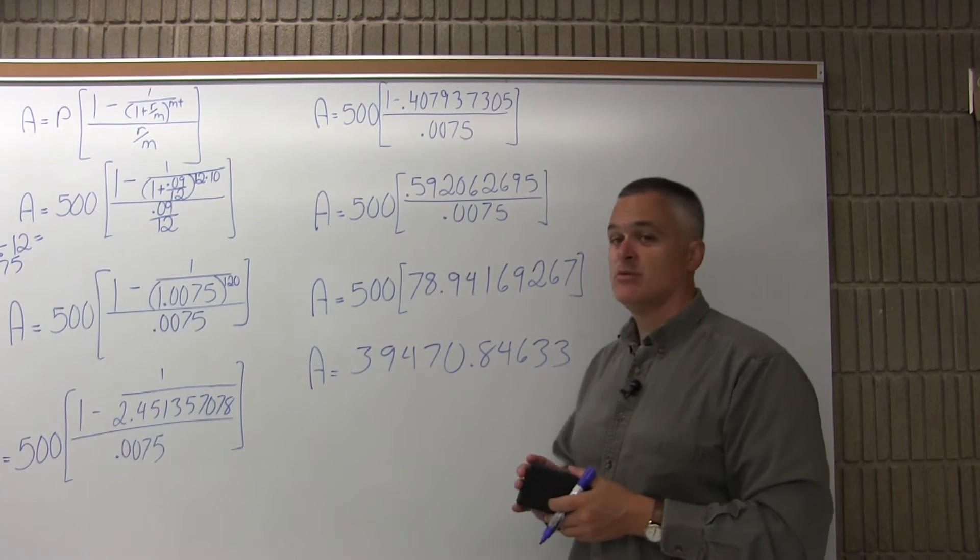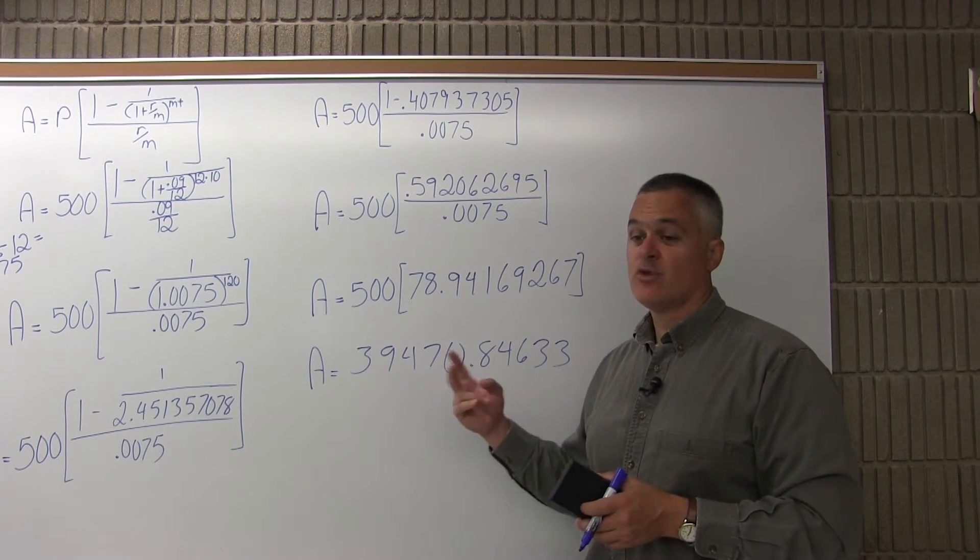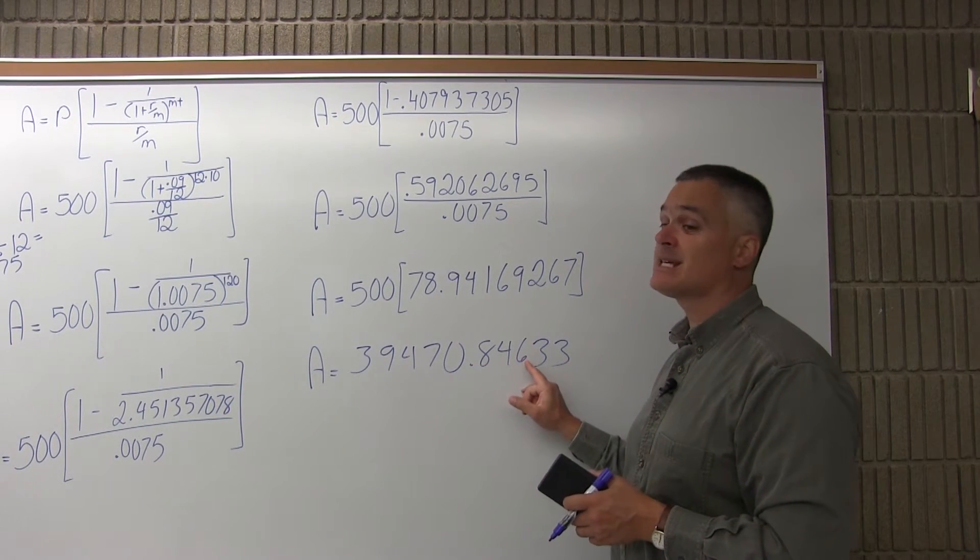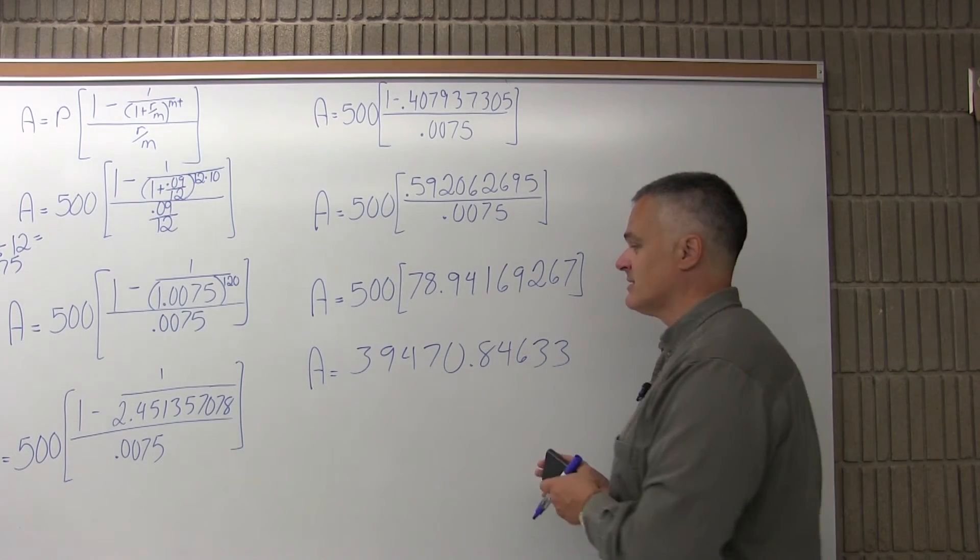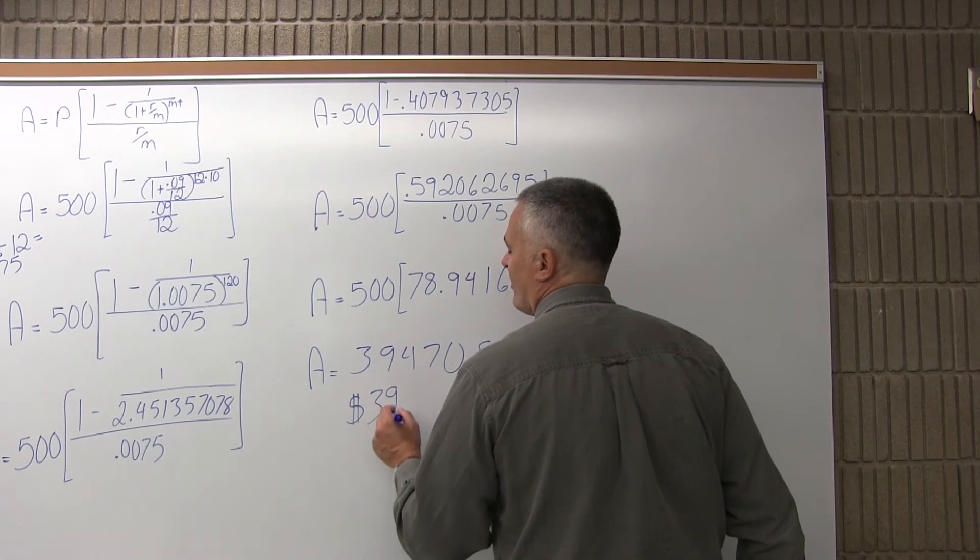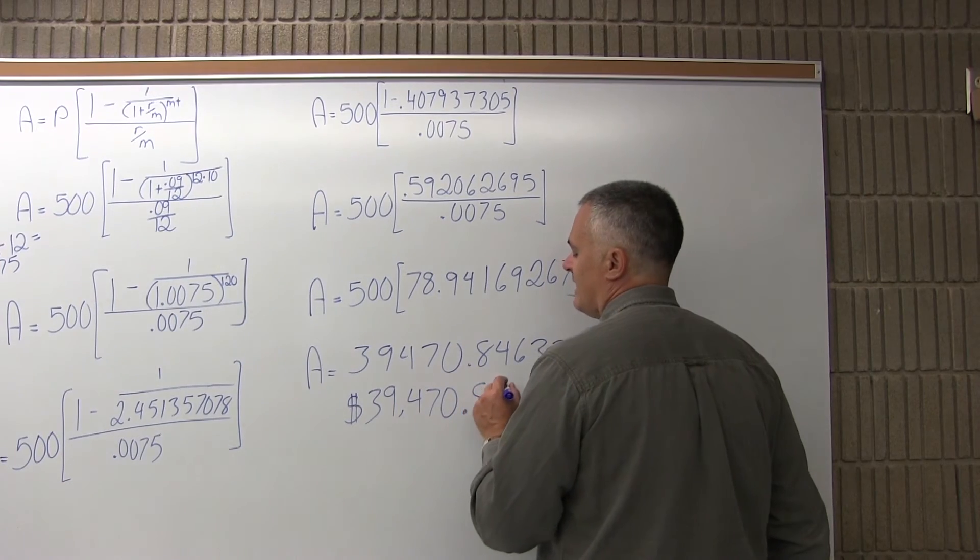So now is the time when I want to round off the decimal a little bit. I don't want to eliminate the decimal. I want to have two places after the decimal. So after my decimal, I have .846 something. So the six is big enough to make it an .85. So my answer is $39,470.85.